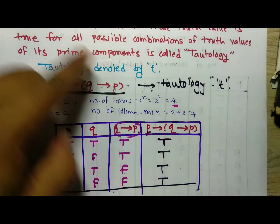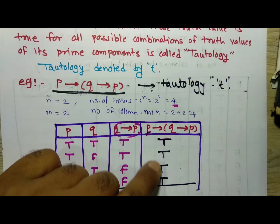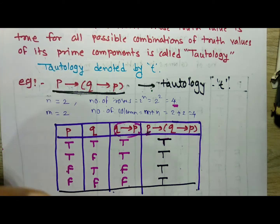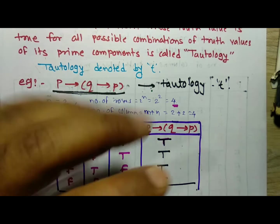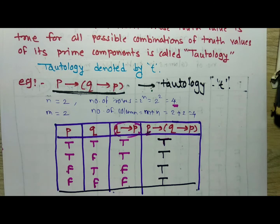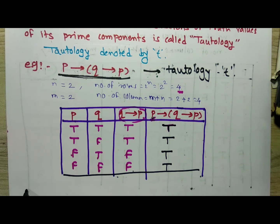Similarly, if you get all false values in the final column, then it is called a contradiction. Now we are going with the definition of contradiction.